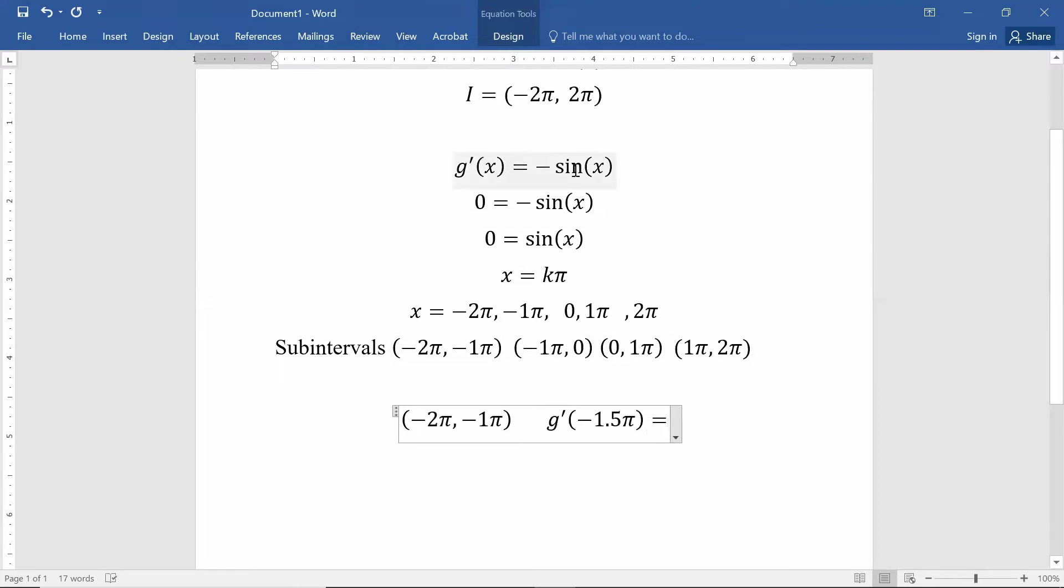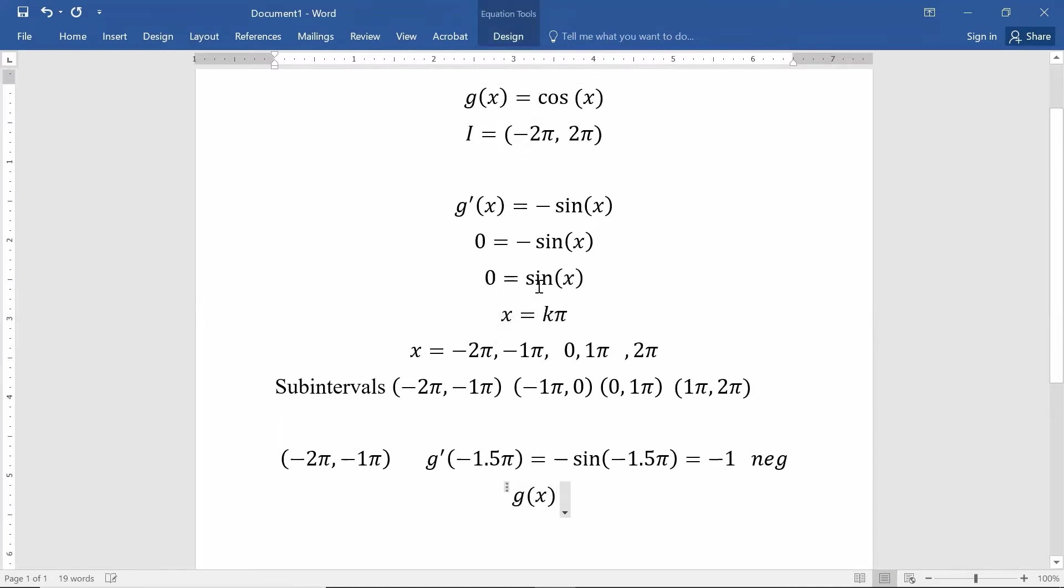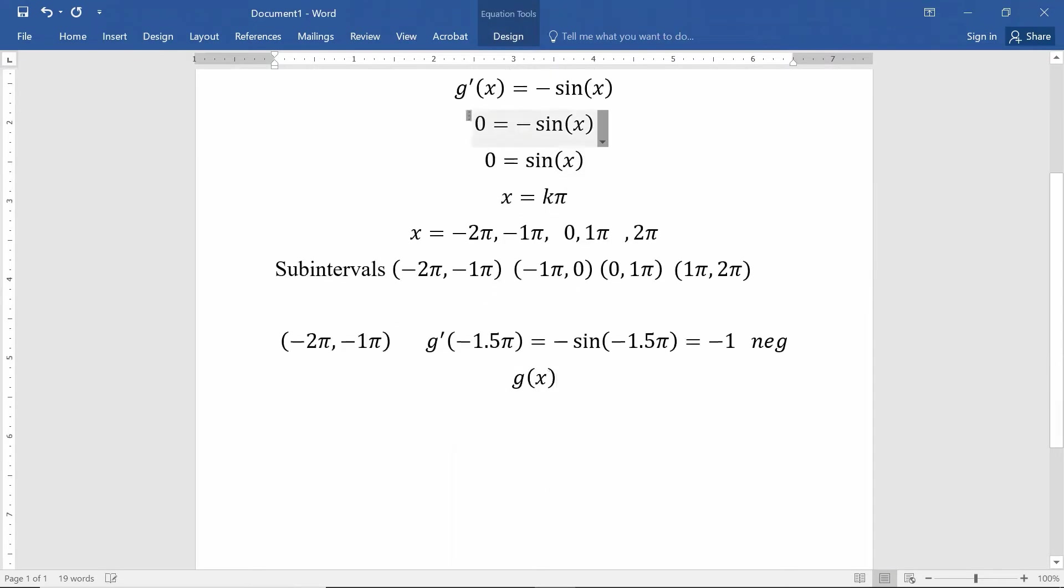Let's plug that into here. Remember that this is negative sine of x. So negative sine of negative 1.5π. Just type that into the calculator. I ended up with a negative. Now the important part is that we got a negative out. So I know my function g of x, or in other words, cosine of x, is decreasing on the interval from negative 2π to negative 1π.